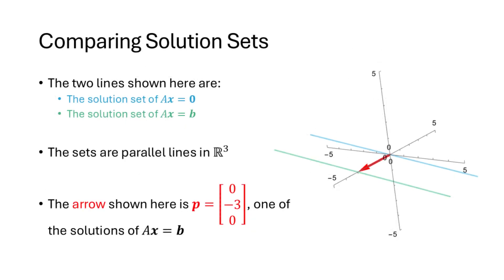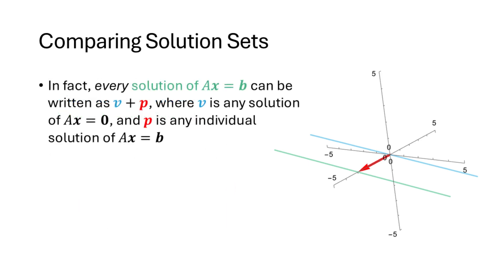If we compare these two solution sets, you can see them both graphed here. Both of these are lines in three dimensions, and they're connected by this vector (0, -3, 0). The lines are parallel and the vector connects the two solution sets. One way to think about what's going on here is that every solution of Ax equals b can be written as v plus p, where v is any solution of Ax equals 0, and p is the specific solution of Ax equals b. The vector in green is the solution of Ax equals b, the vector in blue is the corresponding solution of Ax equals 0, and p connects those two solutions.